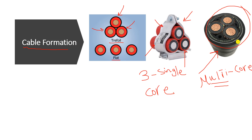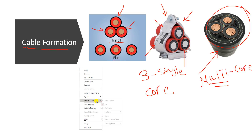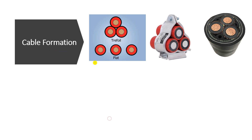The multi-core cable carries all three phases in one large cable. In this lesson we talk about the trefoil formation — three cables in a triangular arrangement — and the flat formation, where the three phases A, B, C are separate from each other with a space between them.